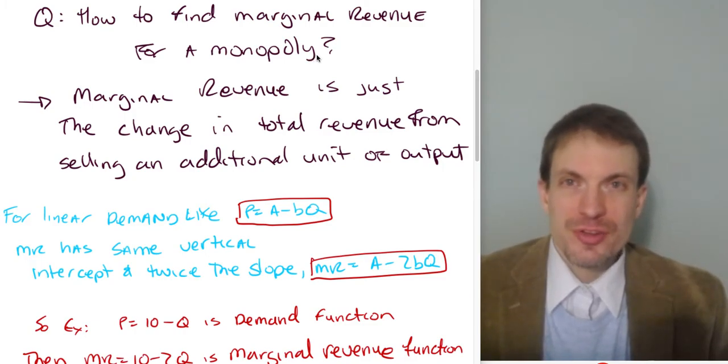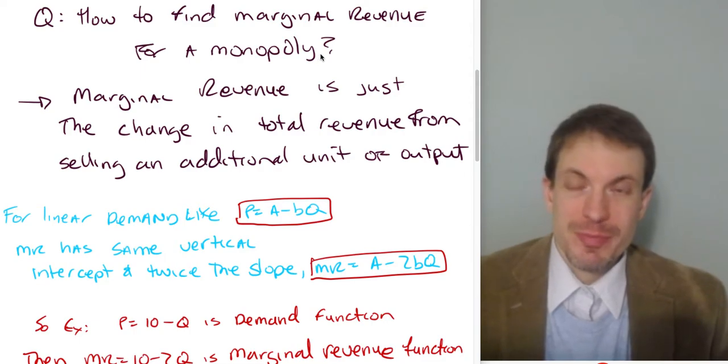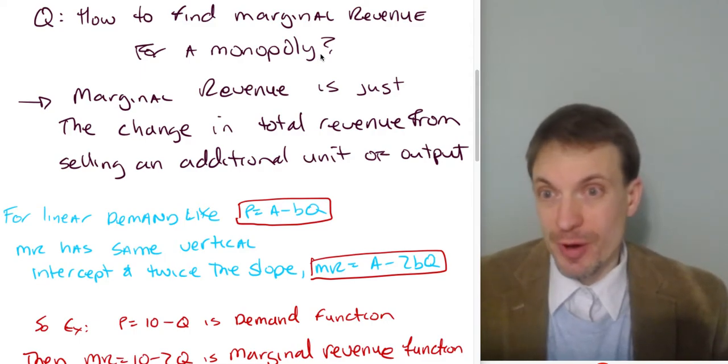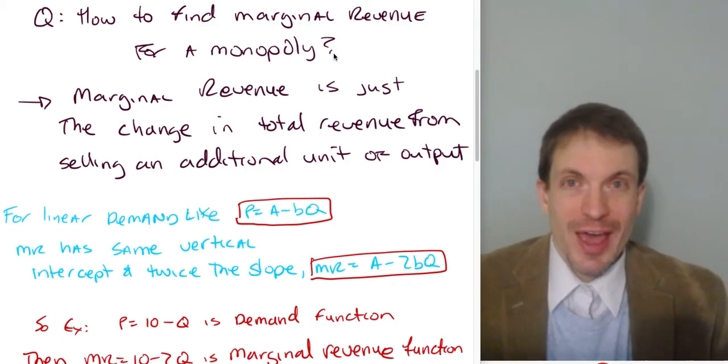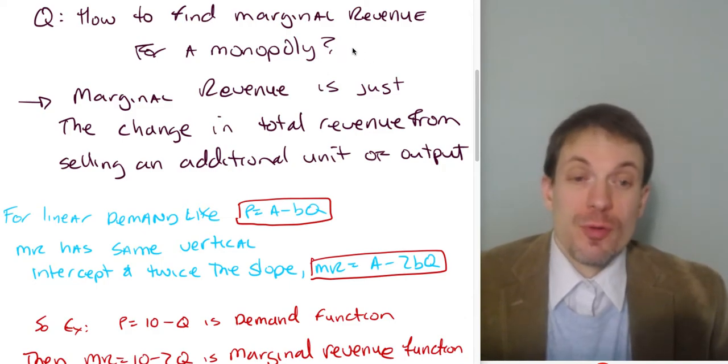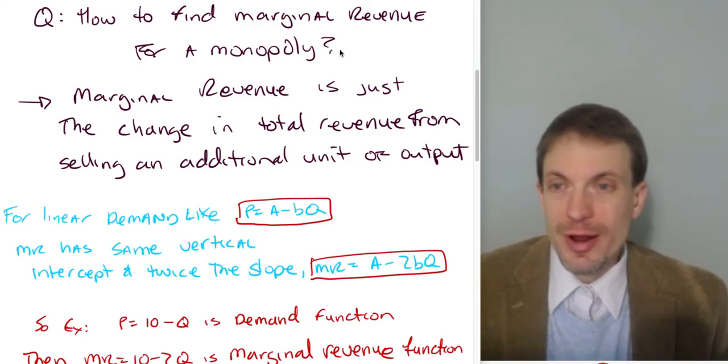marginal revenue and price generally aren't going to be the same. Unless the monopolist is practicing first degree price discrimination, then the demand curve and the marginal revenue curve are exactly the same. And I've got a video on that, on first degree price discrimination. I show that picture. But here, for a more standard monopoly, we're expecting marginal revenue is generally going to be less than price.